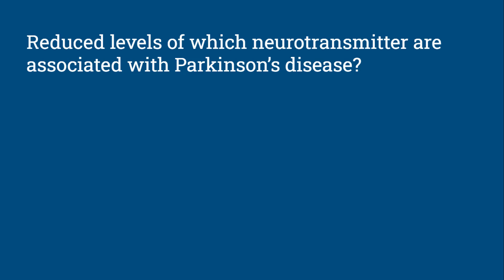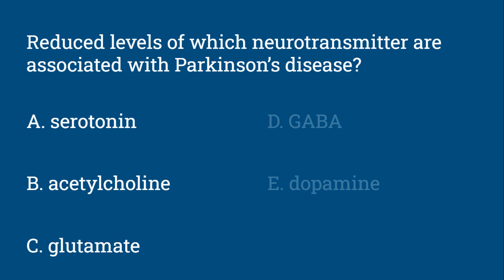Question 4: Reduced levels of which neurotransmitter are associated with Parkinson's disease? Is it serotonin, acetylcholine, glutamate, GABA, or dopamine?